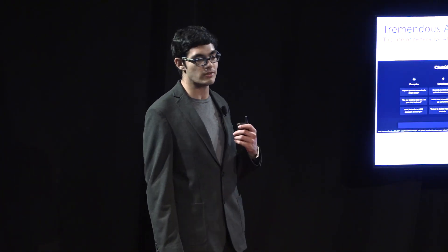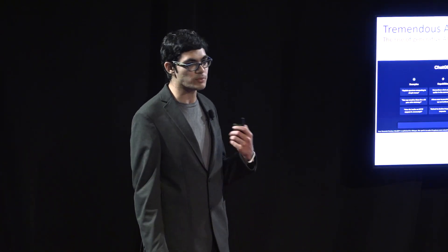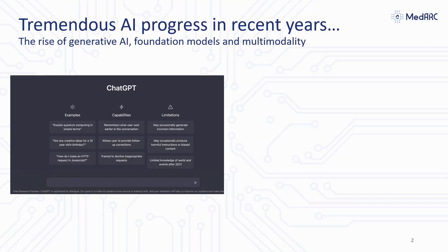That kind of started out with ChatGPT as one of the first very popular foundation models that took in text and produced responses to text. There've been many other examples of generative AI before that, but I think this is the first very popular and very successful example. People have been using these foundation models to build a variety of assistants and tools for a variety of domains.